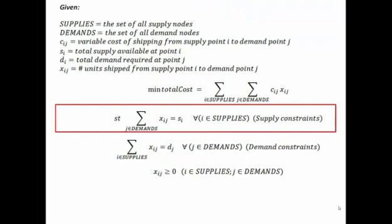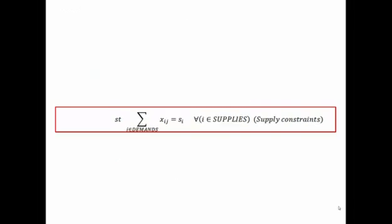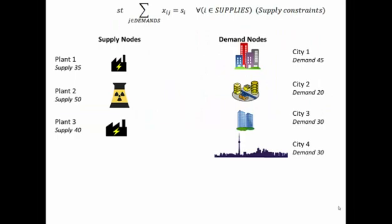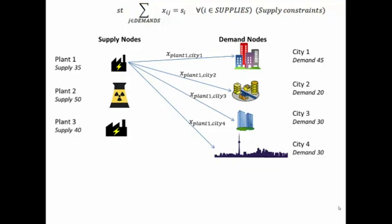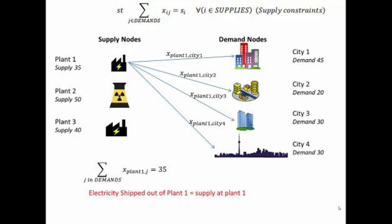The next part we're going to go over are the constraints, starting with the supply constraints. In our PowerCo problem, we have supply nodes and demand nodes. Each supply node can send electricity to each of the four cities, and the amount being sent is captured by our decision variables. We want to make sure that as we're sending electricity to each city, we don't send more electricity than that supply node has. If we added up all the decision variables associated with plant one, we want to make sure it exactly equals 35.